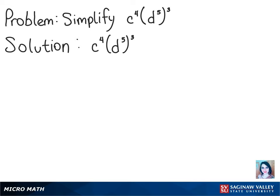To solve this problem, we'll be using the property of exponents. In this case, we have to multiply the exponents. So our first step, we'll have c to the fourth power times d to the power of 5 times 3.